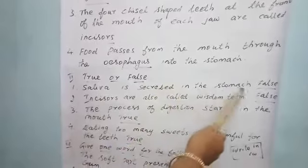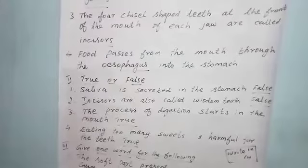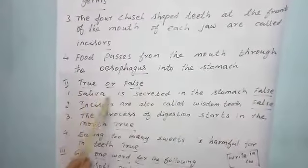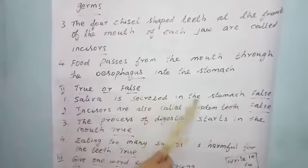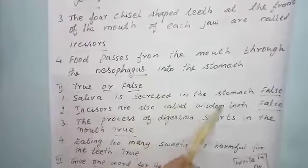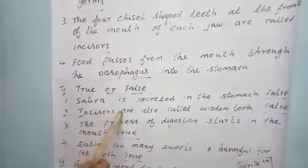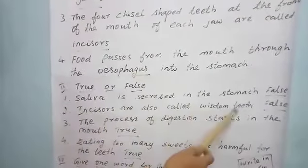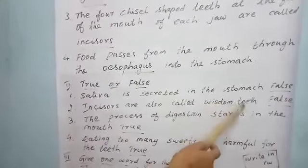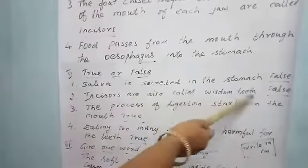True or false? Saliva is secreted in the stomach. So saliva is secreted in the mouth, isn't it? So the statement 'saliva is secreted in the stomach' is false. Incisors are also called wisdom teeth — W-I-S-D-O-M. Since incisors are the front teeth, they are not wisdom teeth. That is also a false statement.